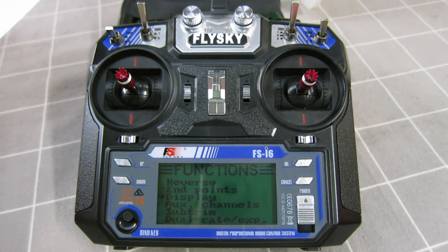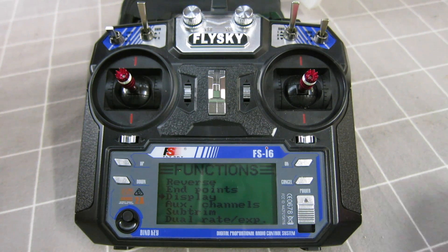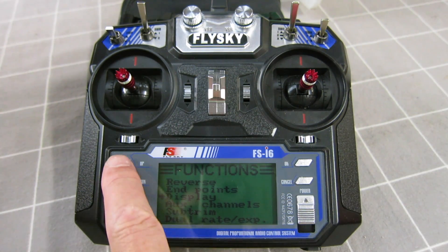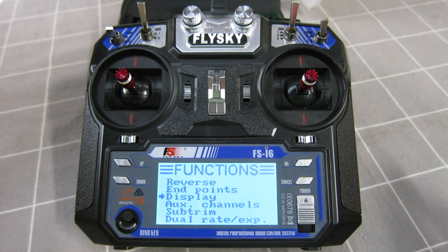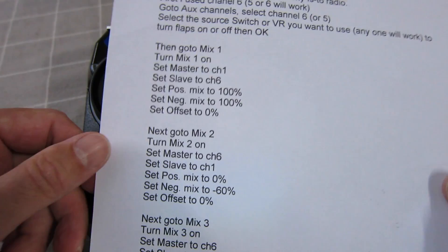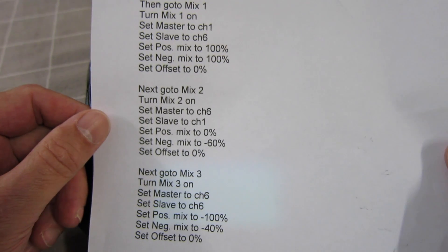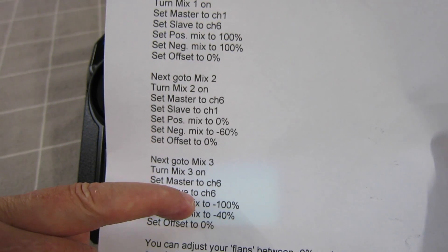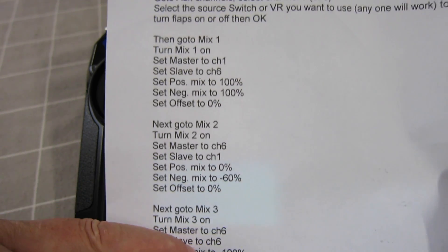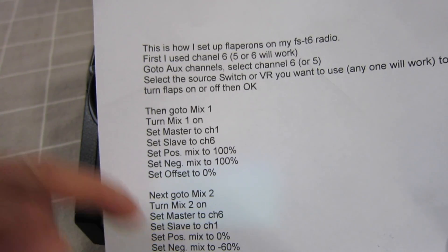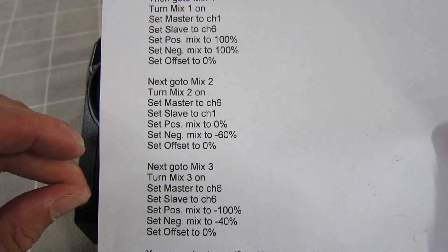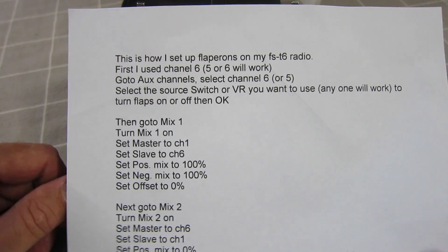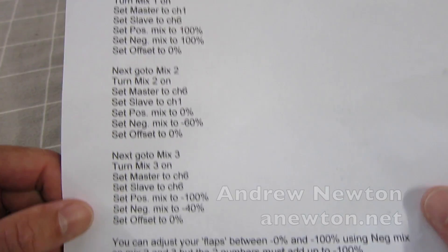Now there is a fourth method of doing flapperons, and this was put together by a chap called Mountain Man on RC Groups — if I remember I'll put a link to the thread in the notes. I don't really understand this one because you end up mixing channel 6 into channel 6 itself. It does work, I just don't understand how, so I'll let you have a look at it on RC Groups.